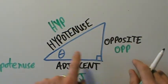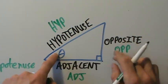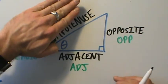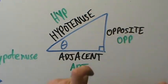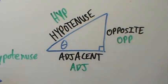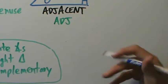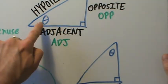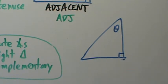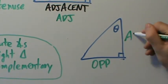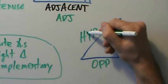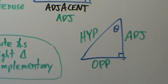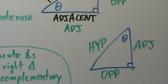The opposite side is across the triangle from angle theta. The adjacent side is right next to theta — but note the hypotenuse is also next to it, so the adjacent side is specifically the non-hypotenuse side next to theta. Importantly, which side is opposite and which is adjacent depends on where theta is. If theta moves to a different vertex, the opposite and adjacent sides switch, but the hypotenuse is always the hypotenuse. These are basic but very useful definitions for trigonometry.